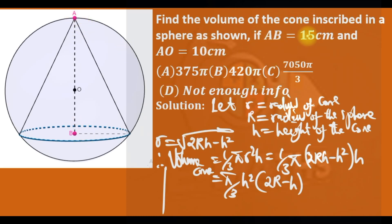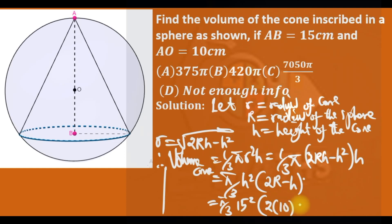The height of the cone AB is 15 and OA is 10, so substituting: V = (π/3)(15²)(2×10 − 15) = (π/3)(225)(20 − 15) = (π/3)(225)(5). Since 5 × 225 = 1125 and 1125/3 = 375, we get 375π. So our answer is option A.